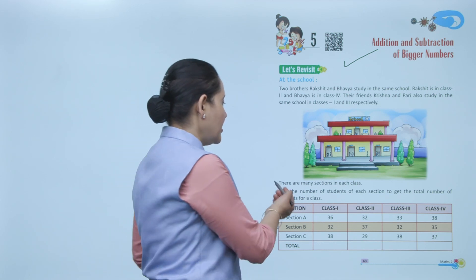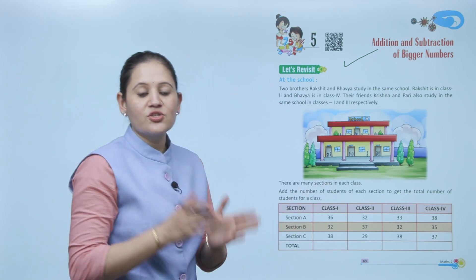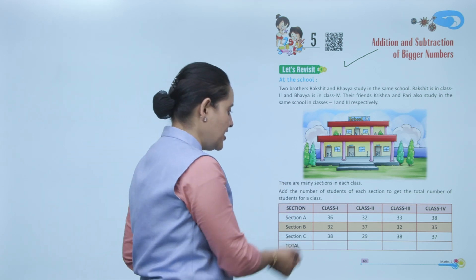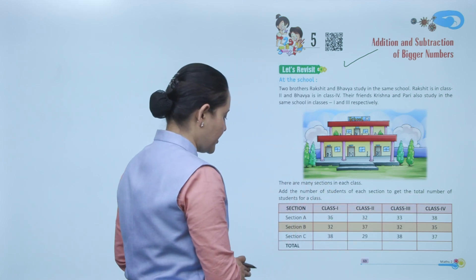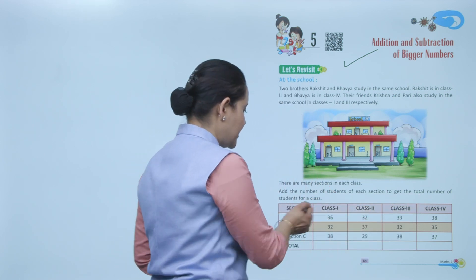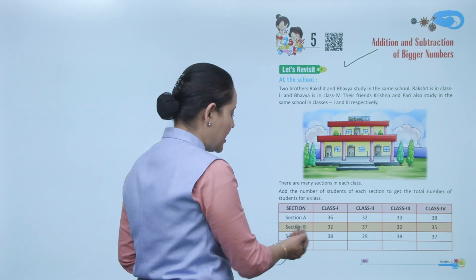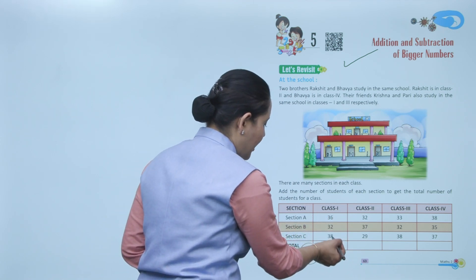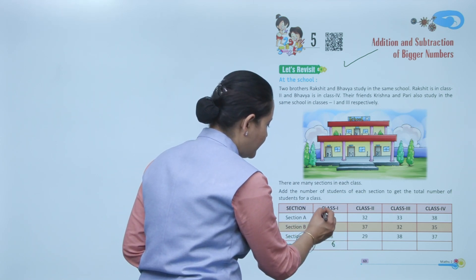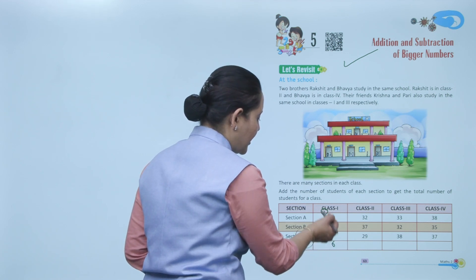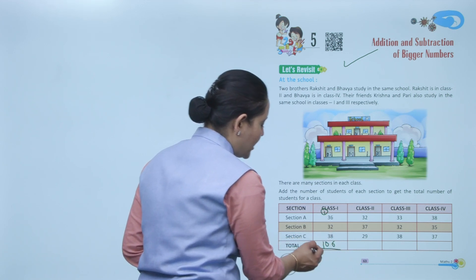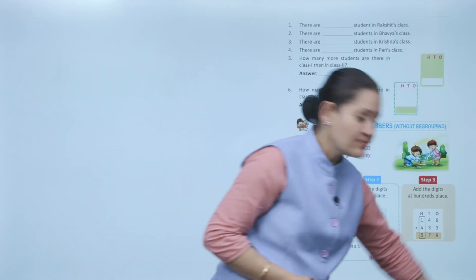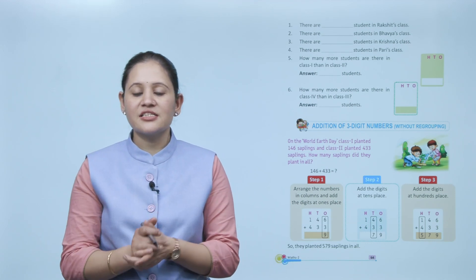There are many sections in each class, so add the number of students in each section to get the total number of students for each class. Sections, classes, and number of students are all given. In class 1: section A has 36 students, section B has 32, and section C has 38. Adding these: 6+2+8=16, write 6 carry 1; 3+3+3+1=10, write 0 carry 1; total is 106 students in class 1.